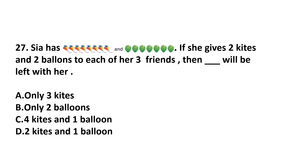Question number 27. Sia has kites and balloons. If she gives 2 kites and 2 balloons to each of her 3 friends, then how many will be left with her? She gives 2 kites to 3 friends, so 3 times 2 = 6 kites given away. She has 8 kites total, so 8 minus 6 = 2 kites remain.